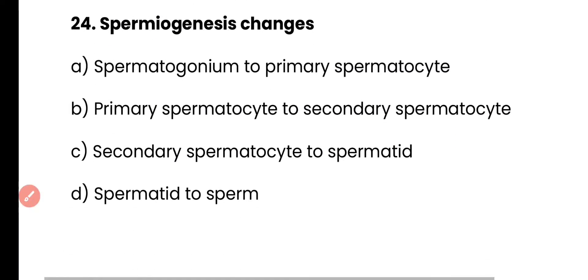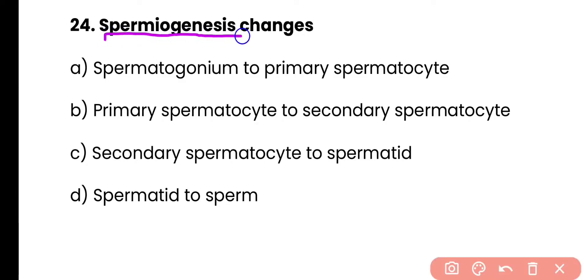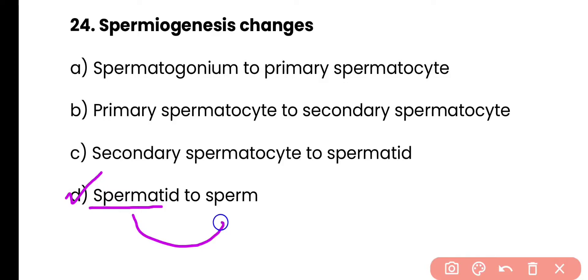Question 24: Spermiogenesis changes — spermatogonium to primary spermatocytes, primary spermatocytes to secondary spermatocytes, secondary spermatocytes to spermatid, or spermatid into sperm? Correct answer is option D. Spermatids are immature sperms and they are changed into functional sperm during the sperm maturation process known as spermiogenesis.